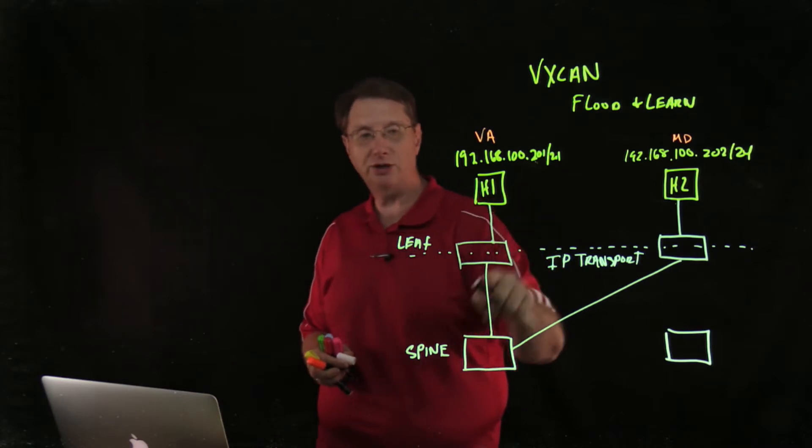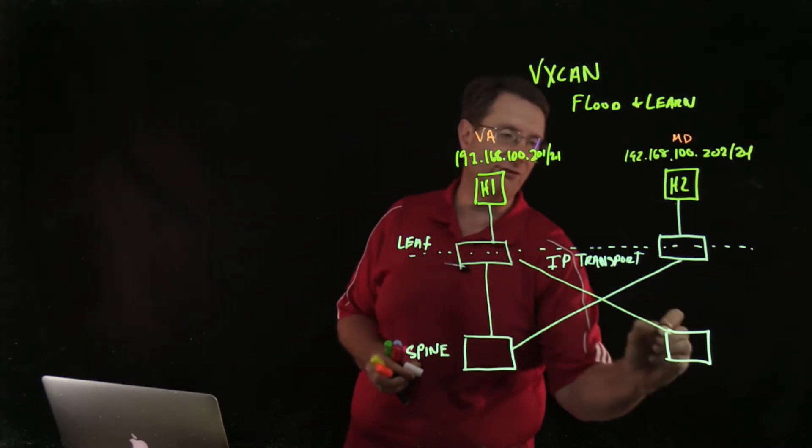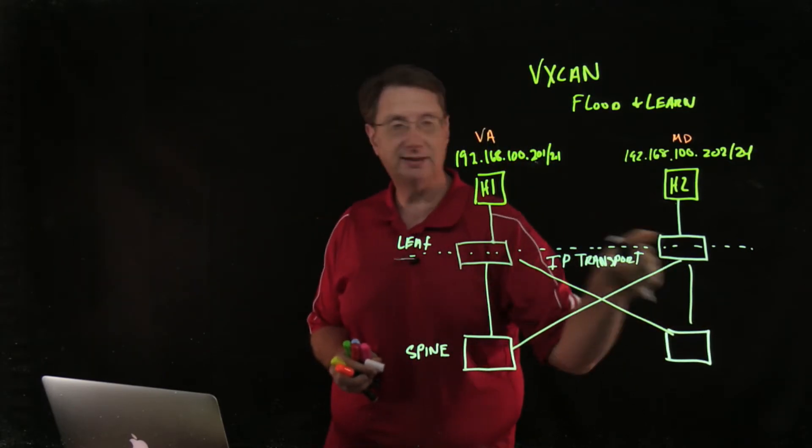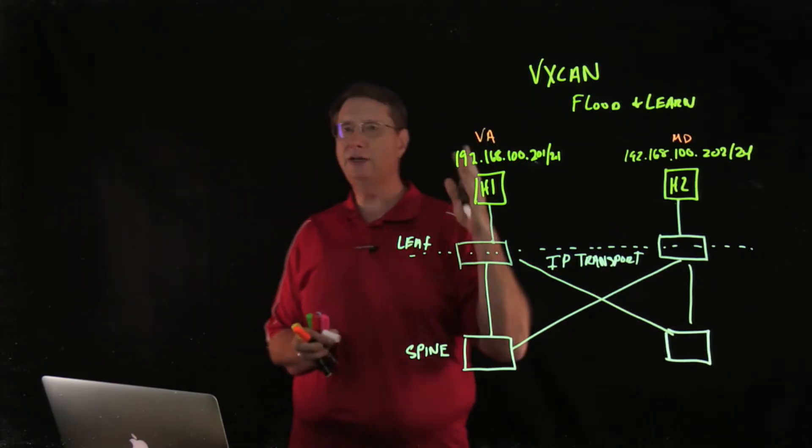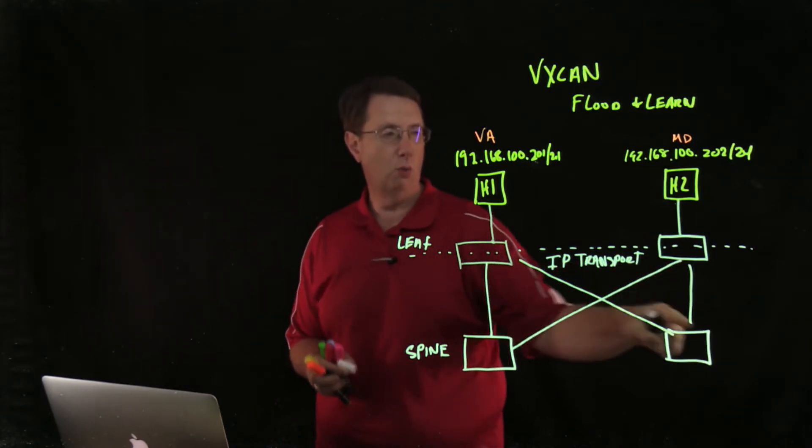As an example, H1 could travel to this leaf to this spine to this leaf, or it could travel from this leaf to this spine to this leaf. What we see is no resource is more than two hops away: one, two, one, two.